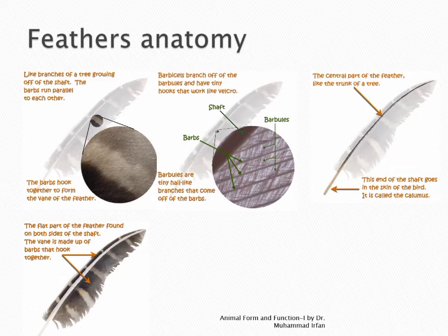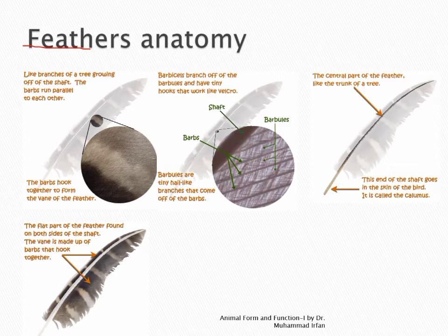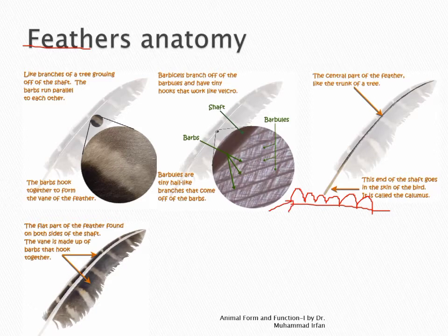Feathers will be studied in detail in the practical class; here is a short overview. The feathers of a bird are collectively called the plumage. Feathers are not necessarily present over the entire outer surface — they are present in specific areas called pterylae, while areas lacking feathers are called apteria. Feathers are derived from epithelial cells of the epidermis through keratinization — the deposition of keratin and death of those cells.